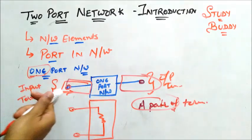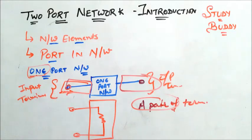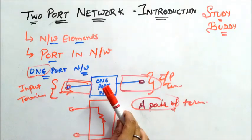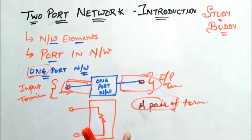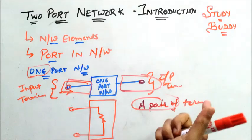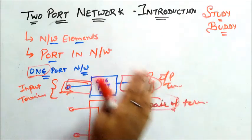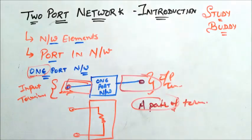So, a one port network basically has only one port in which you can give input and the output will come from that same one port. That is a one port network.